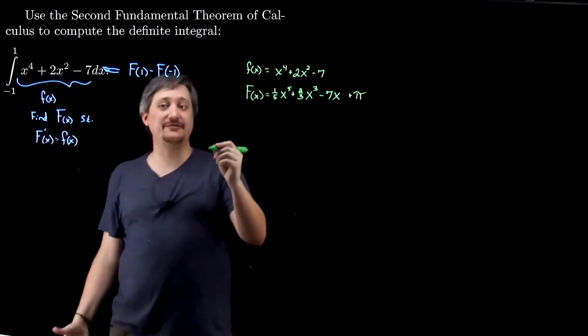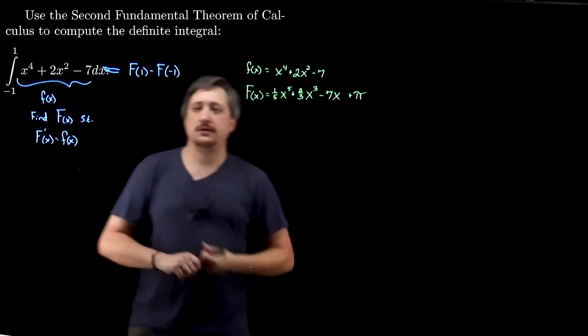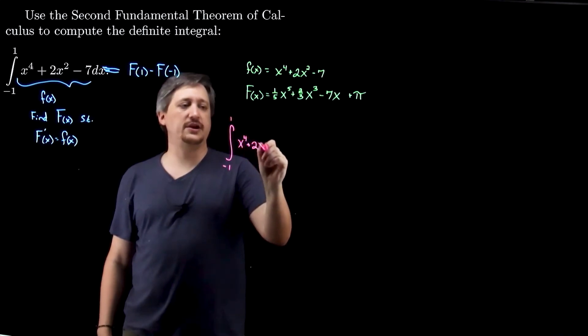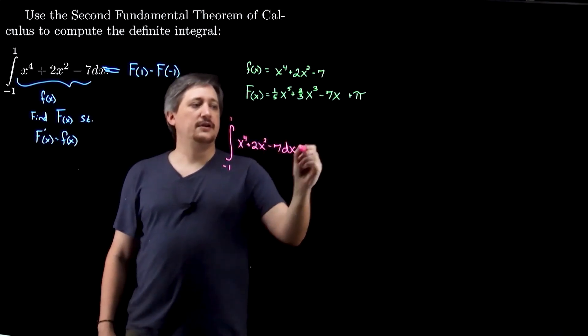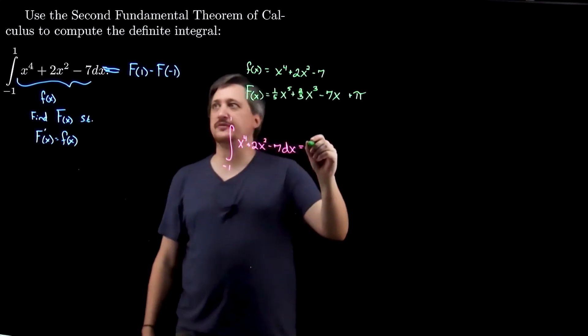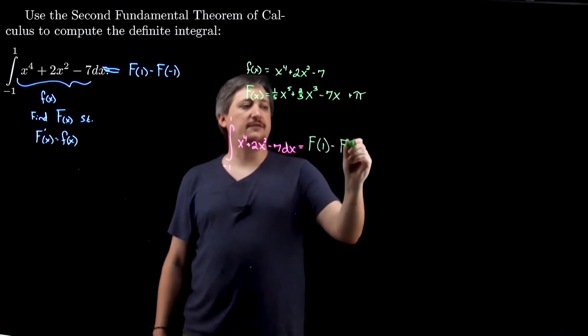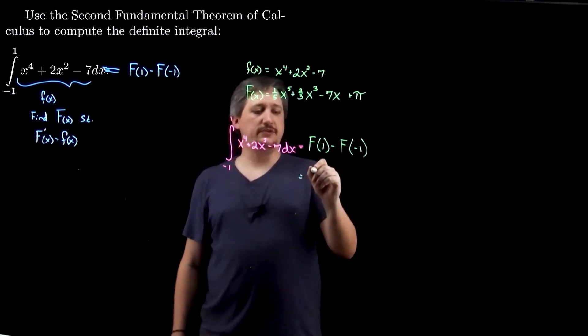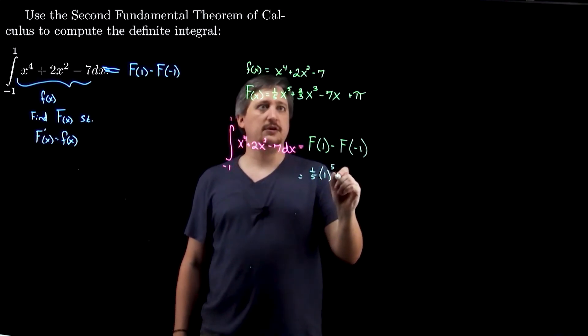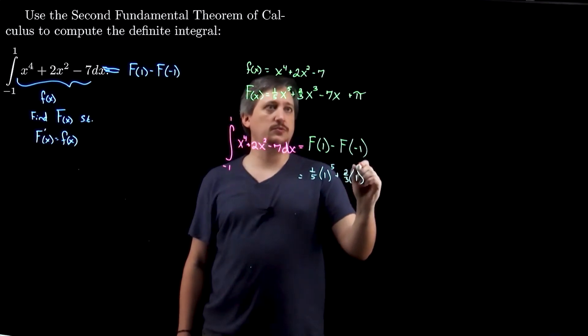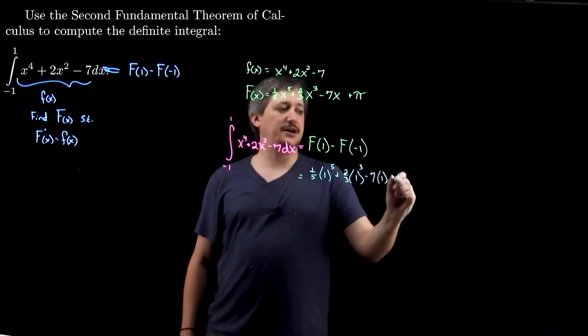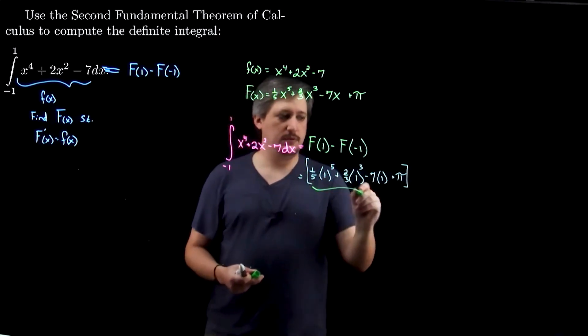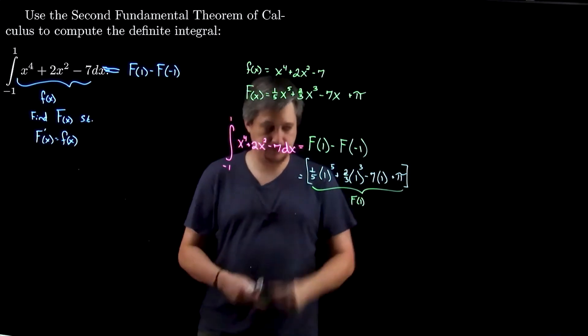this tells me that this definite integral, right, so this integral from negative 1 to 1 of my f, which was x to the fourth plus 2x squared minus 7 dx, supposedly equals, by the second fundamental theorem of calculus, F of 1 minus F of negative 1. Where now, I have such an F. So, I would plug in 1. So, I get 1 fifth times 1 to the fifth plus 2 thirds times 1 cubed minus 7 times 1 plus pi, because I'm a crazy person. So, all of this is F of 1.